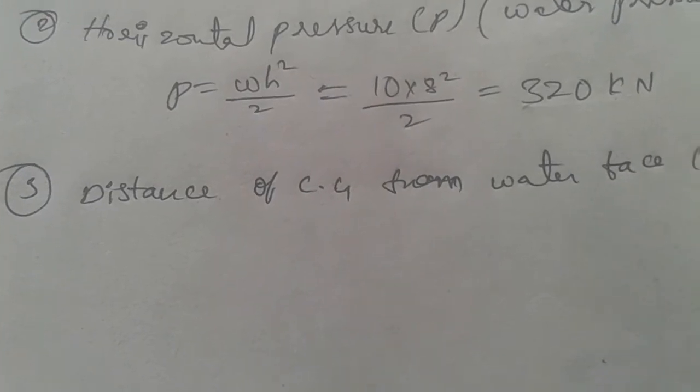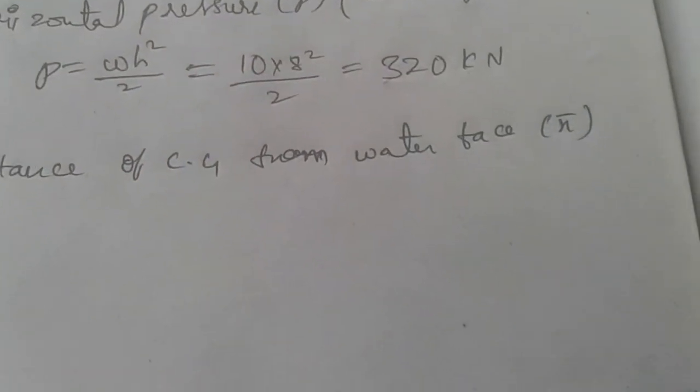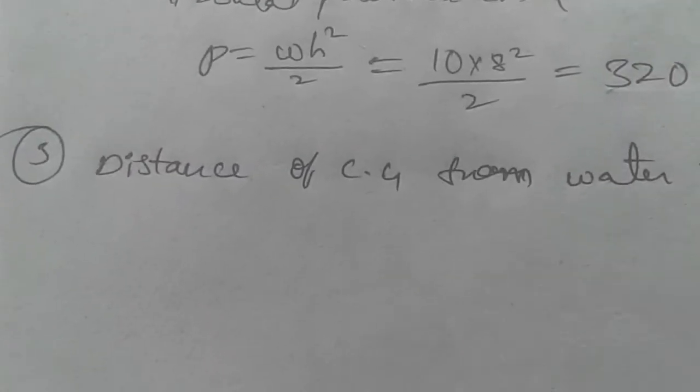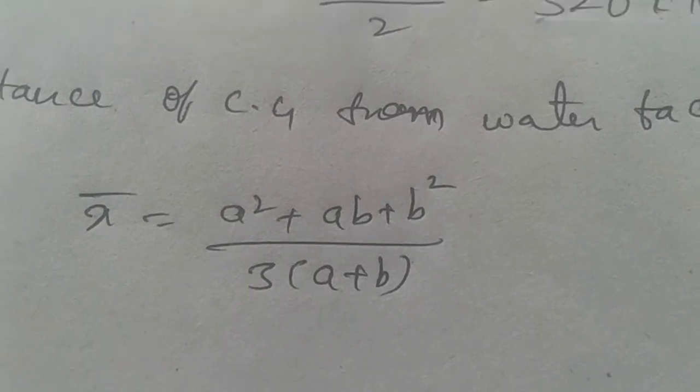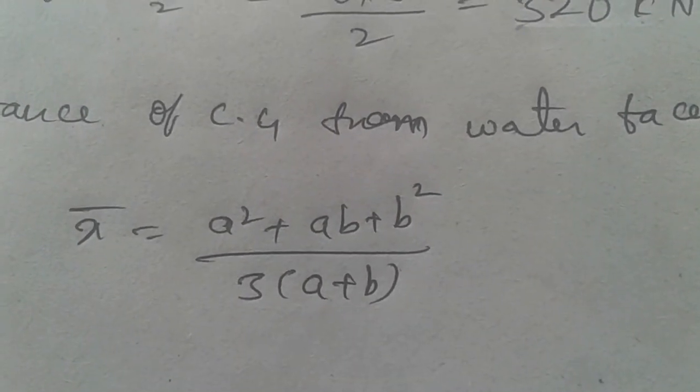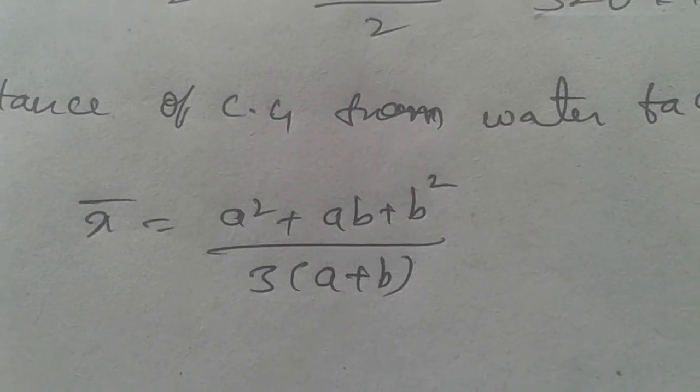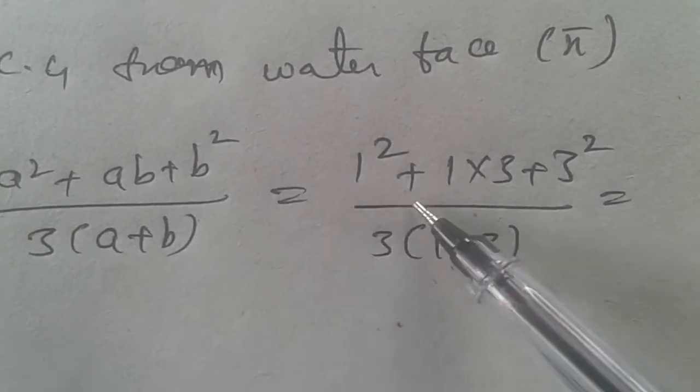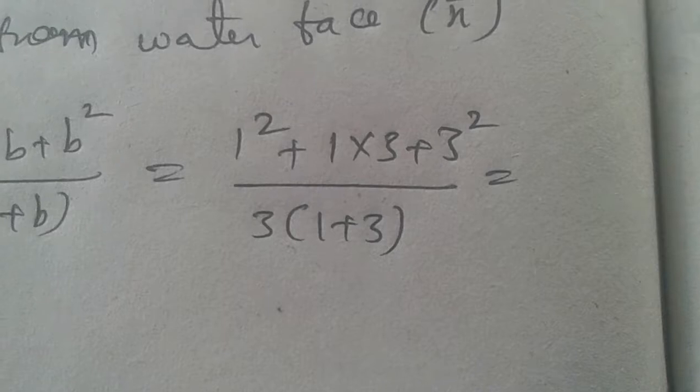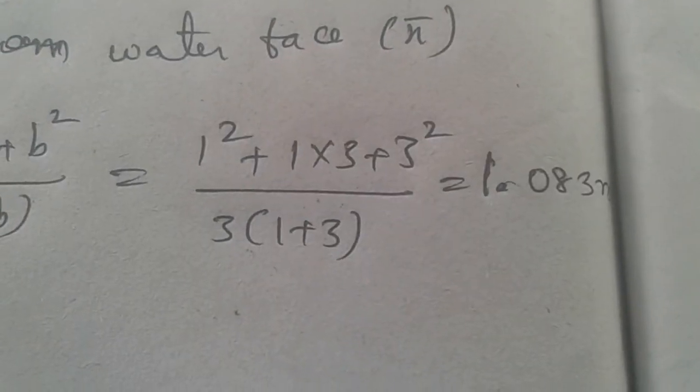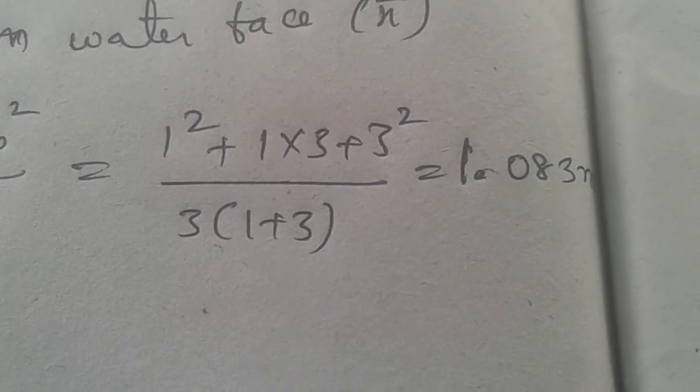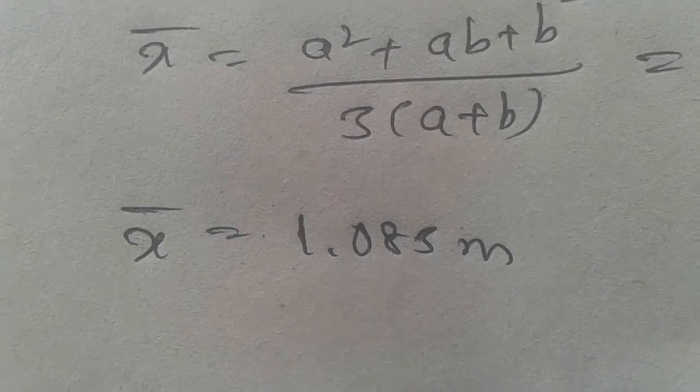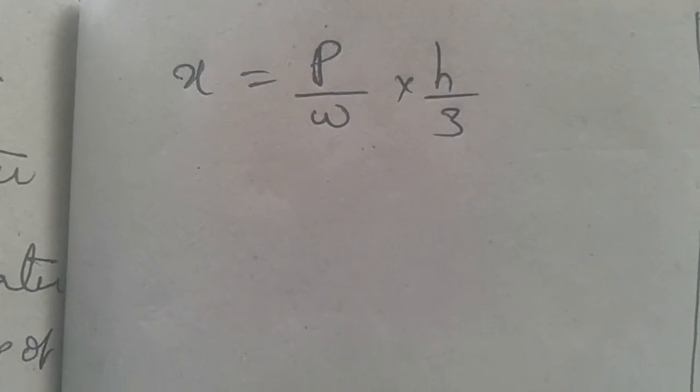We got the value 320. The next step is distance of center of gravity from the water face, X bar. The X bar formula is (A squared plus AB plus B squared) by 3 times (A plus B). Putting all values in the formula, we got the value of X bar as 1.08 meters.